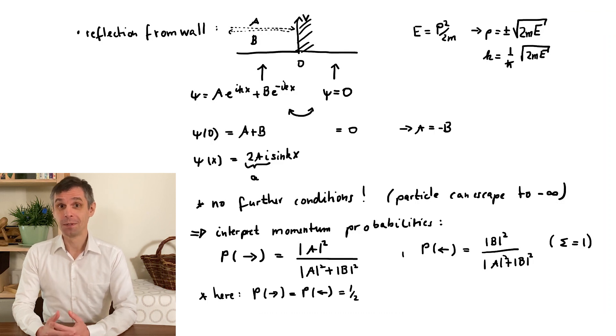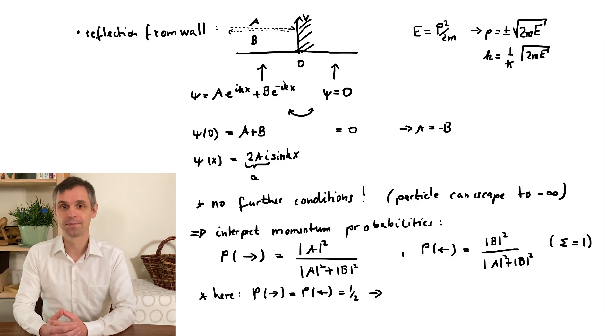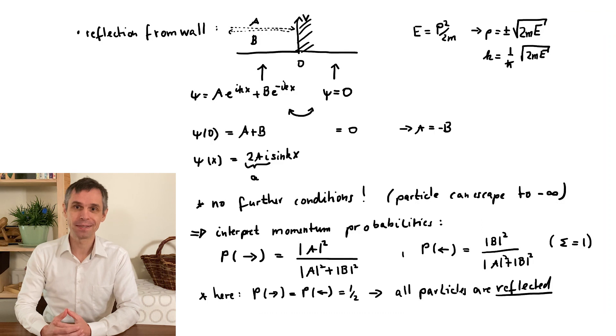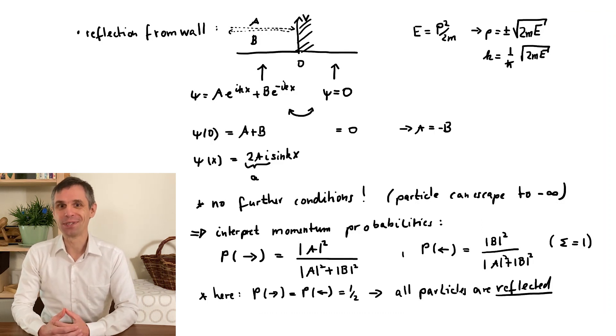Now, to put this into more physical terms, think of having a source of particles somewhere far left. This then means that all the particles are reflected. Interestingly, when we look at the momentum for any given particle, we would still find it with equal chances to move to the right or to the left.